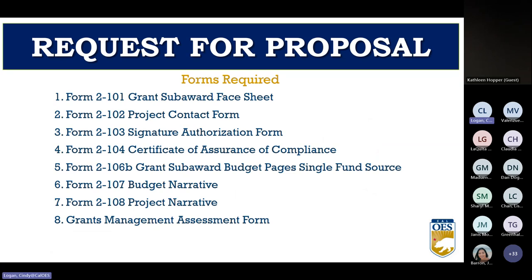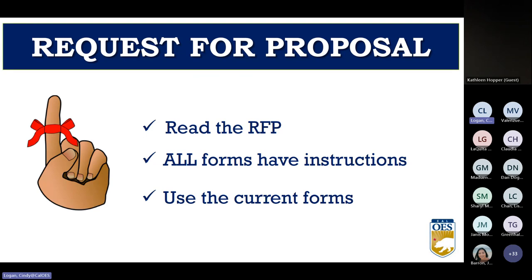There are eight forms required with every request for proposal regardless of program type. Most programs will require additional forms, so read your RFP thoroughly. In the next slides we'll cover some of the most common mistakes found on these forms. You can find the forms at the very end of the RFP in the checklist section with a hyperlink to each form. A few helpful reminders: read the entire RFP to understand what is required; all forms have instructions, so look there first before emailing your program specialist. Use current forms — Cal OES updates forms often, and using an outdated form may delay the processing of your award.